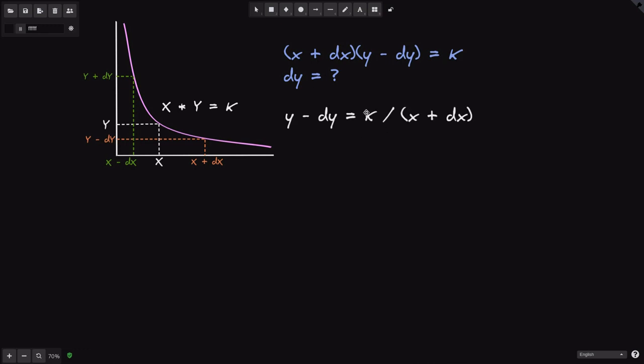We can do simple algebra. Divide both sides of the equation by X plus DX, and you get this equation over here. Bringing Y over to the right side of the equation and flipping signs, we get DY is equal to Y minus K over X plus DX. And that is our equation for how to find DY.